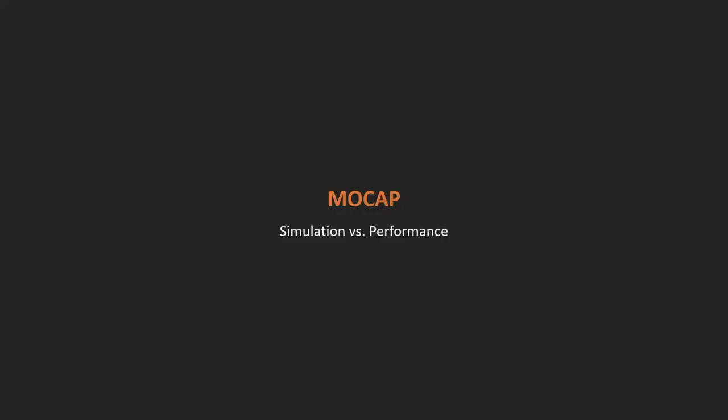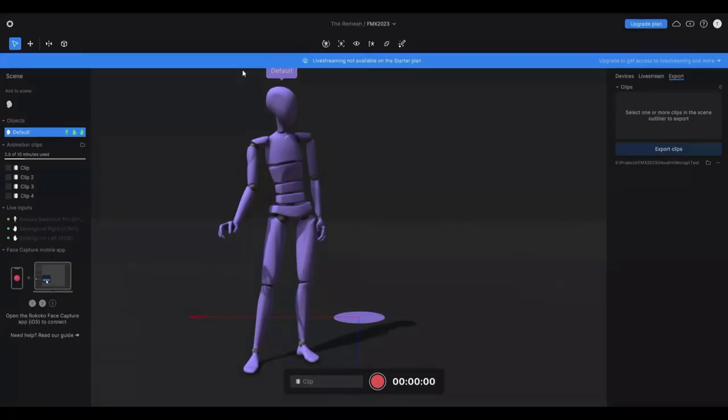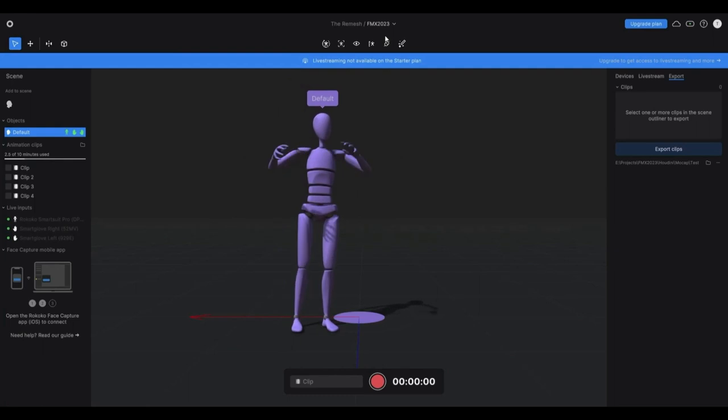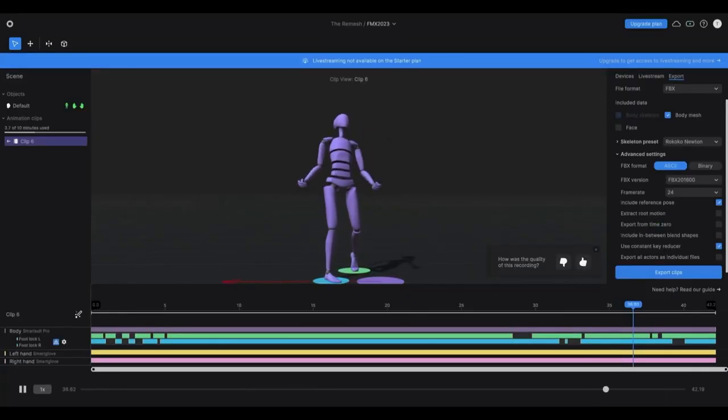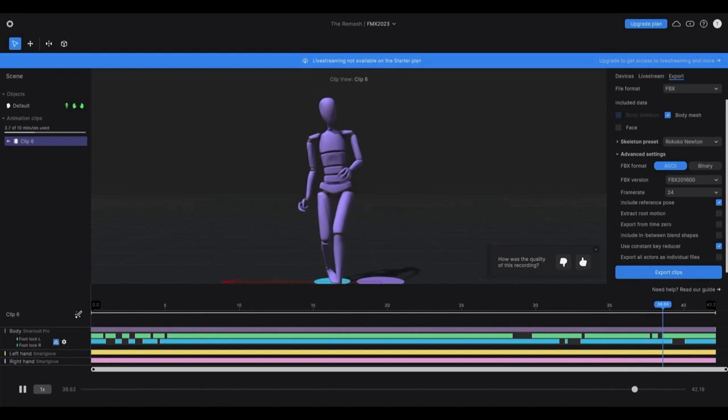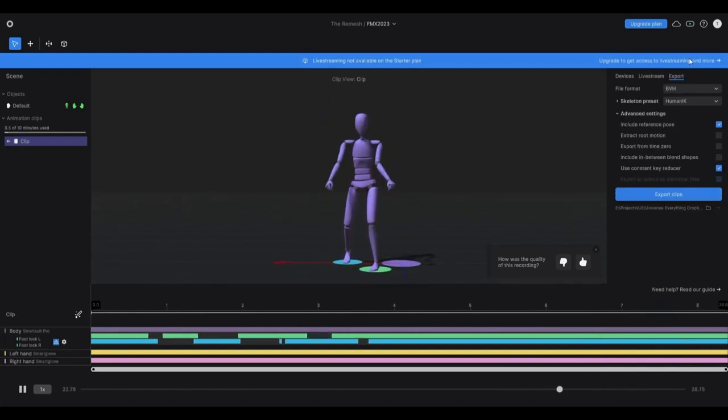We're just going to talk about the process of what we learned during this project. In the beginning, I had received a Rokoko suit two weeks before, and we just wanted to explore the motion of what maybe this character is doing. This is Rokoko Studio, we're recording it, and we're just exploring different types of movements and trying to find what we liked for the character.